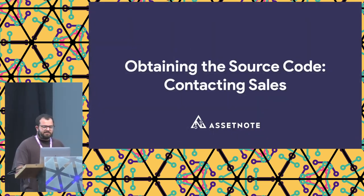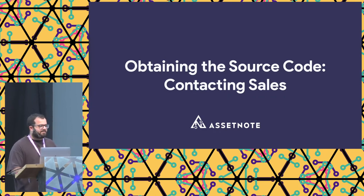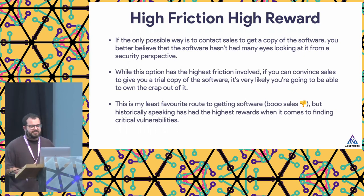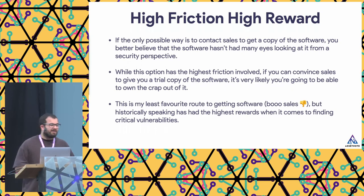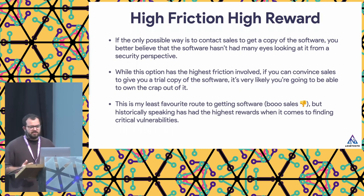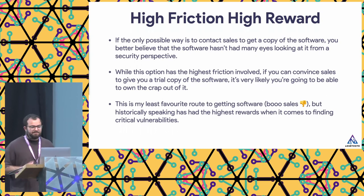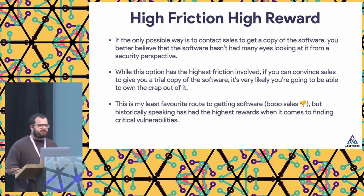The third technique is contacting sales. These enterprise software companies have big sales teams, and this is a high-friction, high-reward technique. If the only possible way is to contact sales to get a copy of the software, you can bet that software hasn't had many eyes on it from a security perspective. While it's often the highest friction, if you can convince sales to give you a trial copy, it's quite likely you're going to find critical vulnerabilities. It's my least favorite route, but historically it's had the highest rewards for me personally.